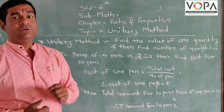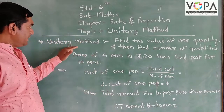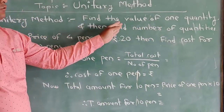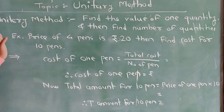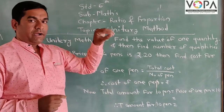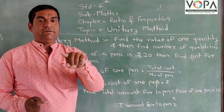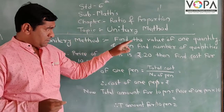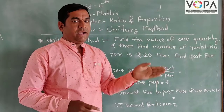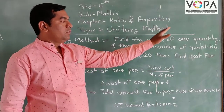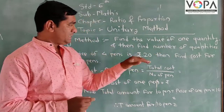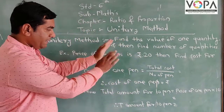First, let's find the definition of the unitary method. The unitary method means: find the value of one quantity, then find the number of quantities required. In simple language, you are given a number of items, and from this you find the value of only one unit first, then find the required number of quantities. Let's take a simple example to make it clear.